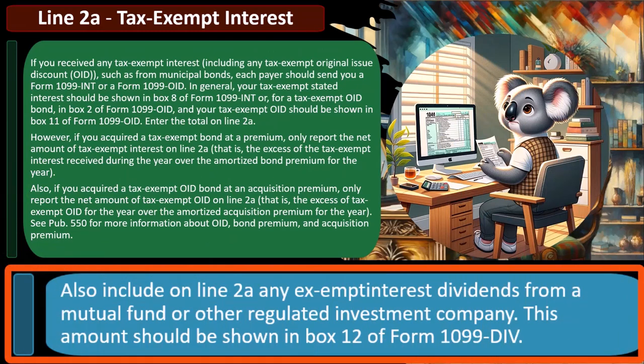Also include on line 2A any exempt interest dividends from a mutual fund or other regulated investment company. This amount should be shown in Box 12 of Form 1099-DIV. This can be a little confusing because you might think — why isn't it on a 1099-INT? That would be for interest. The DIV, you would think, would be for dividends.